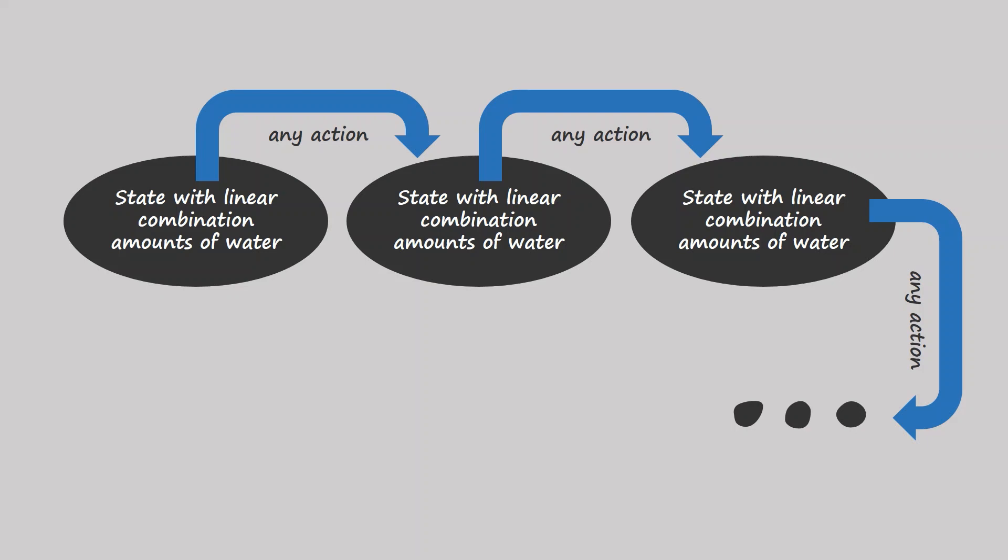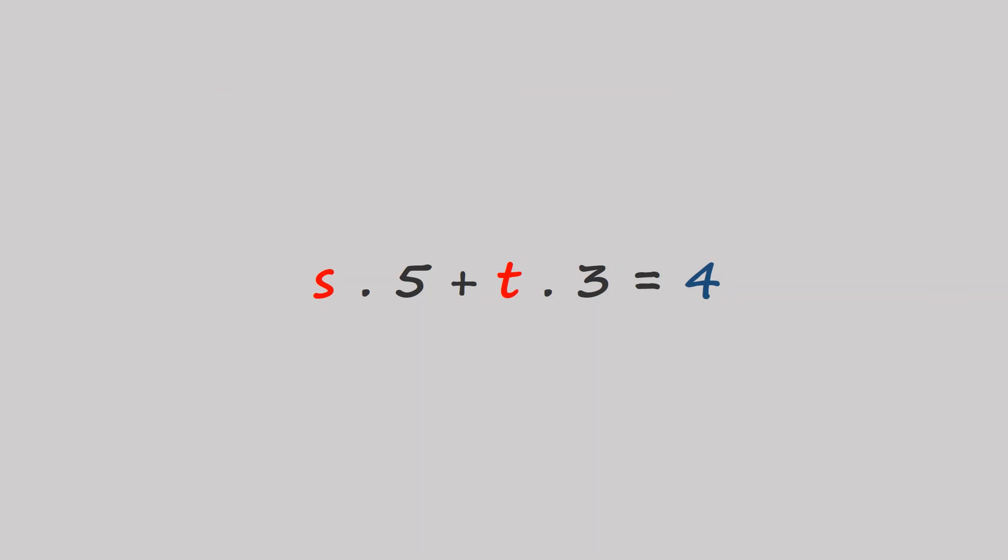So why all this talk about linear combinations? Well, it turns out that linear combinations tell us exactly what to do to get the amount of water we want. For example, 4 equals 3 times 3 minus 1 times 5. This is basically saying fill the 3 liter flask 3 times and empty the 5 liter flask once and you'll get 4 liters of water.